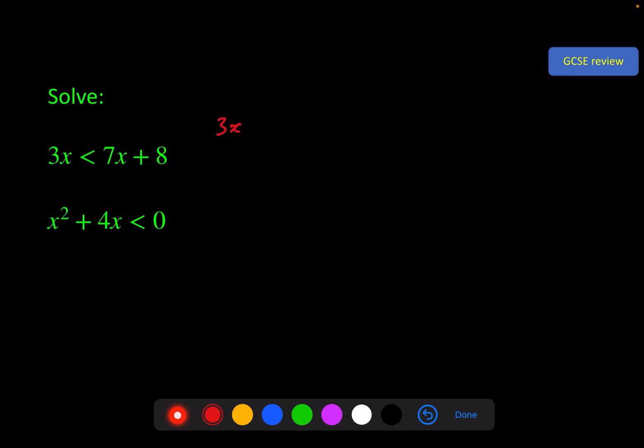First one we've got 3x < 7x + 8. Two ways you might approach this: you might put the 8 over here for minus 8 and then have 4x over here, divide by 4, and get x > -2. Or you might like your x's on the left and say -4x < 8, divide by -4, x < -2. But here we've got two contradictory answers.